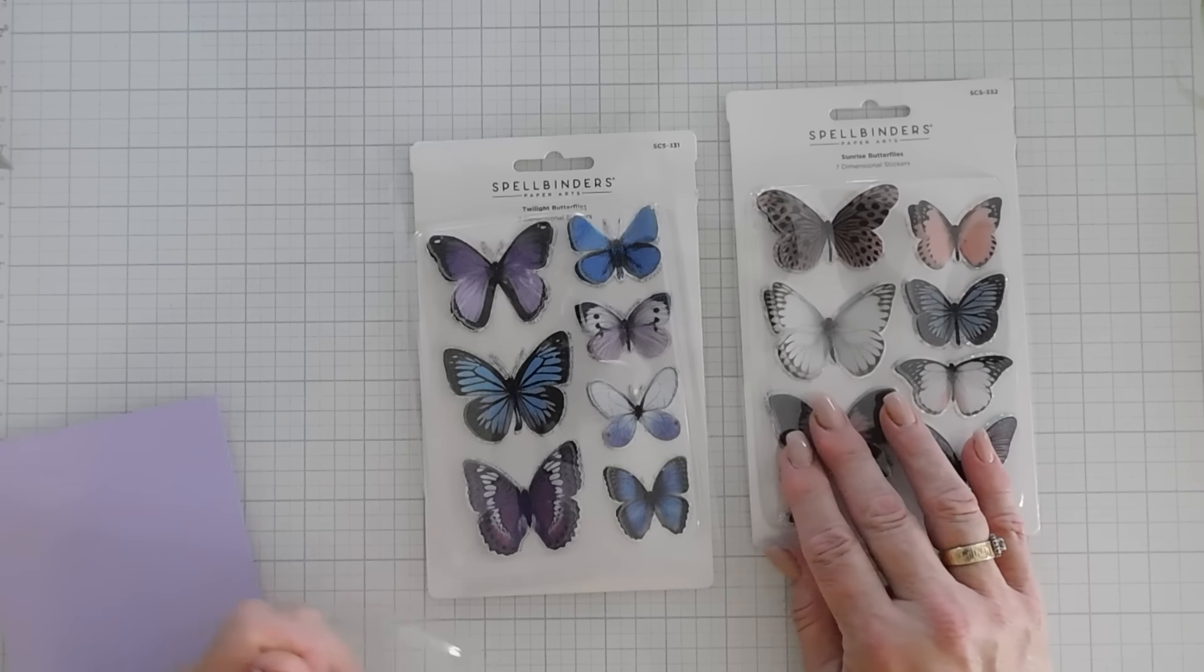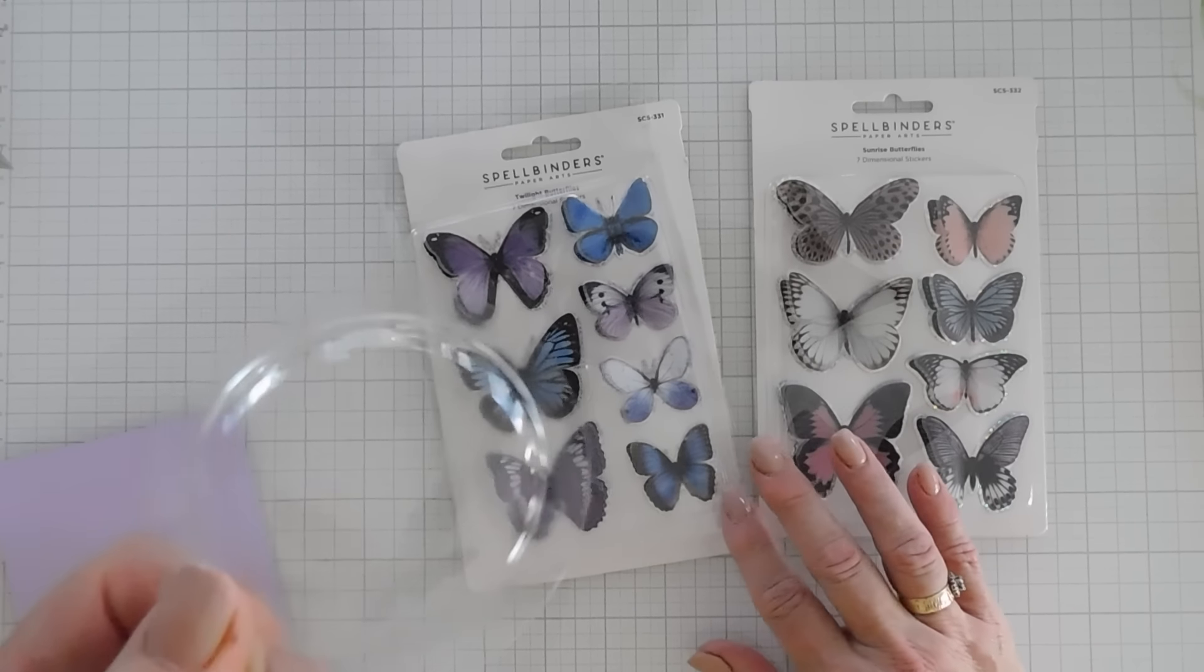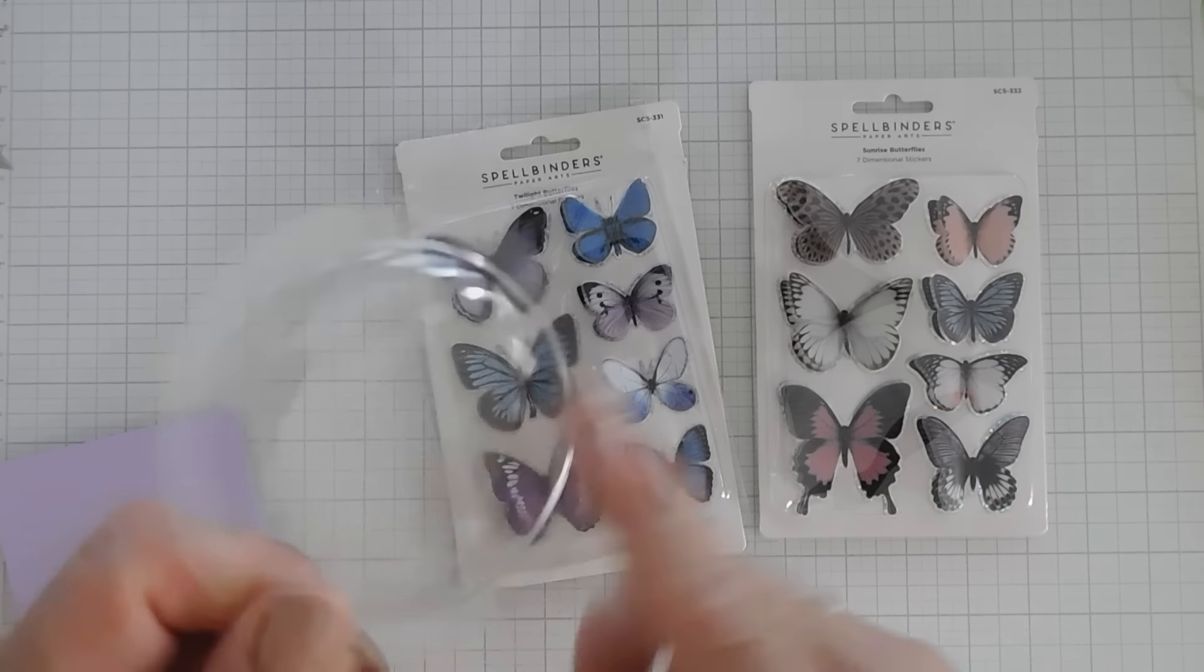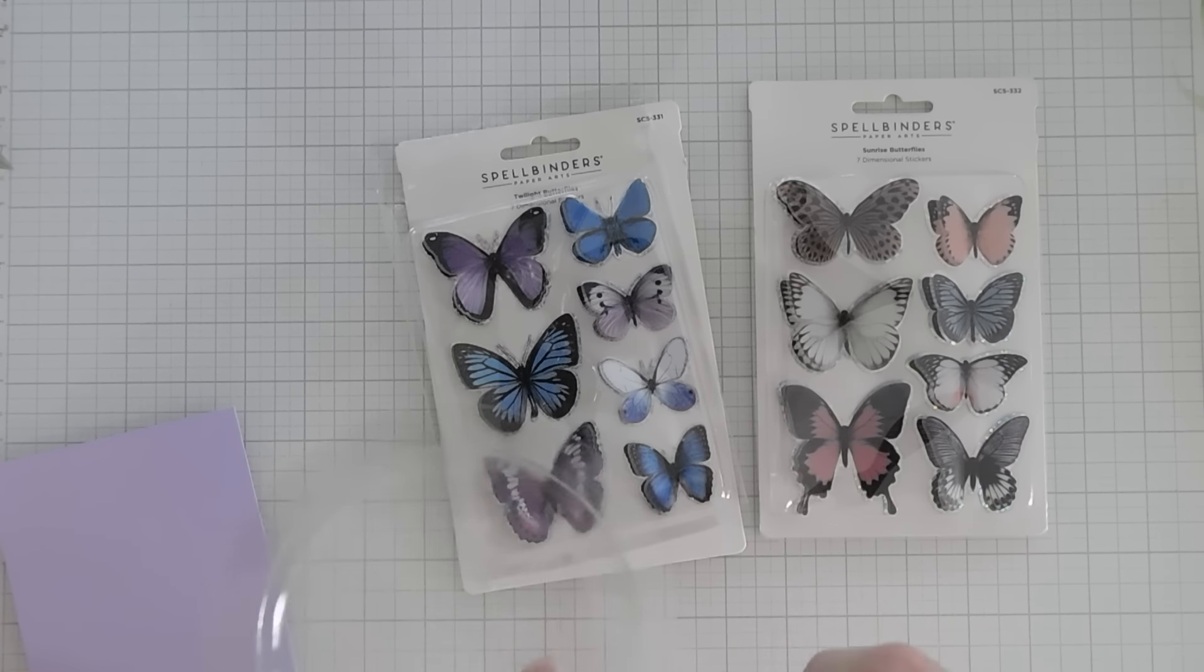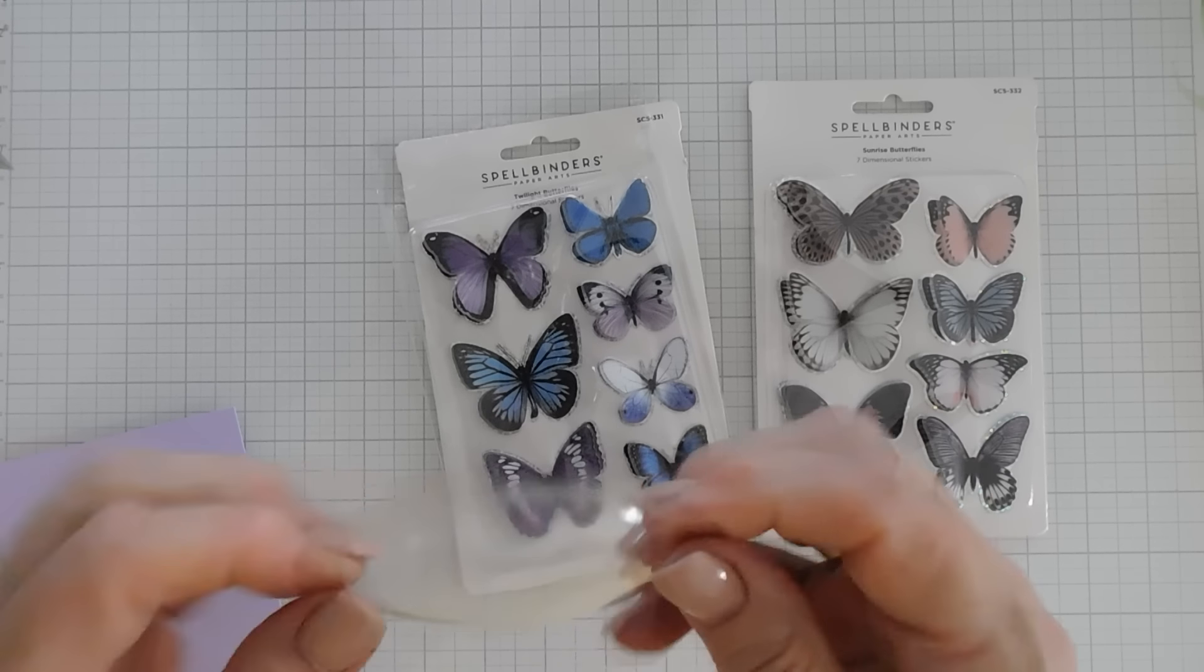You're probably going, okay, how are you going to keep the butterfly in the shaker card? Well, Spellbinders also has these called Puffy Circles. They're from Waffle Flower.